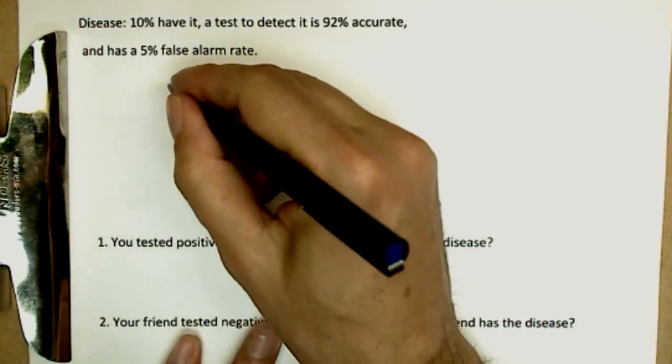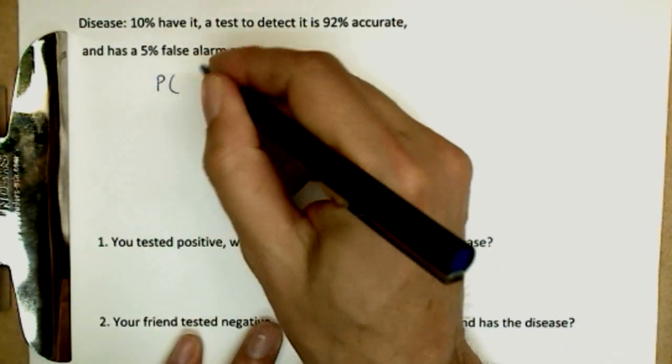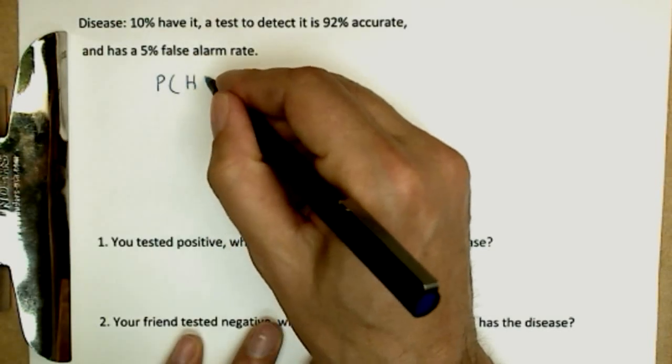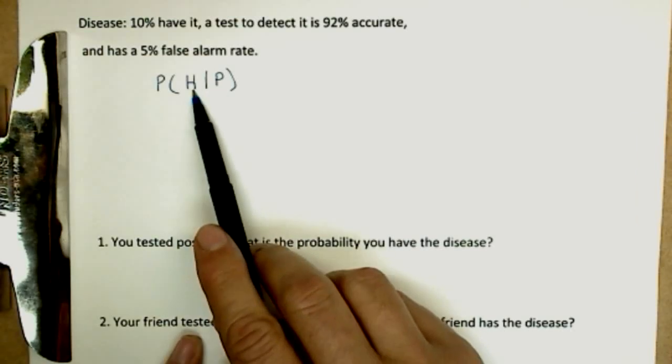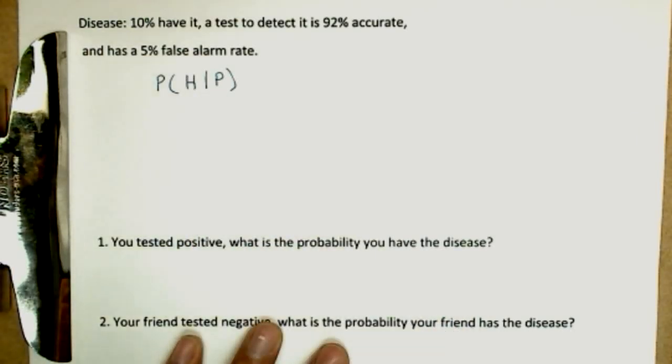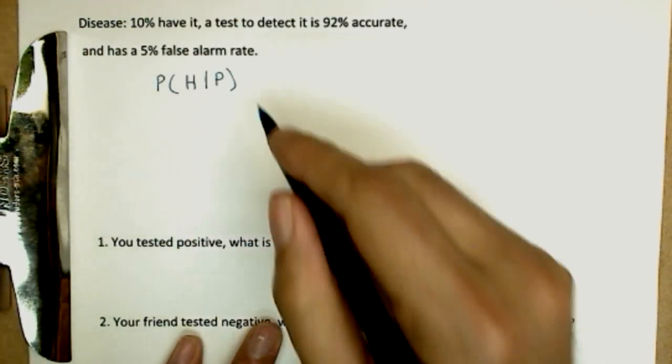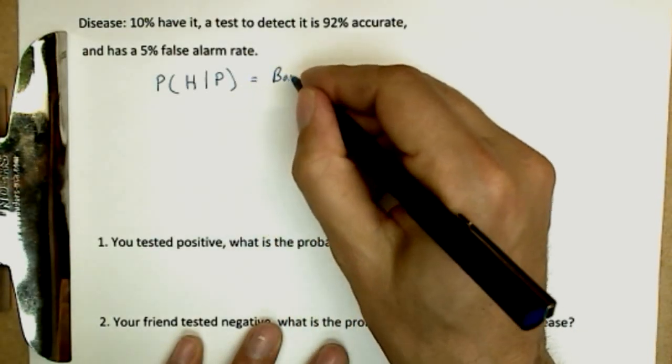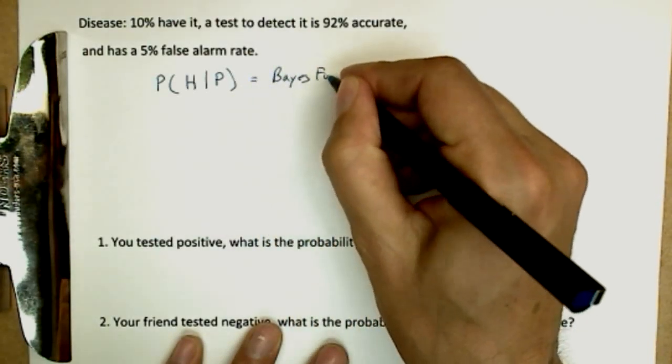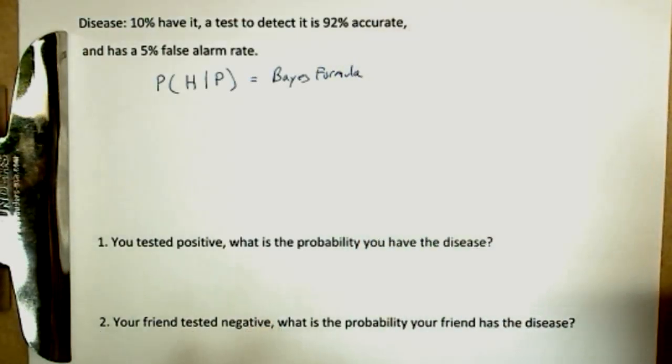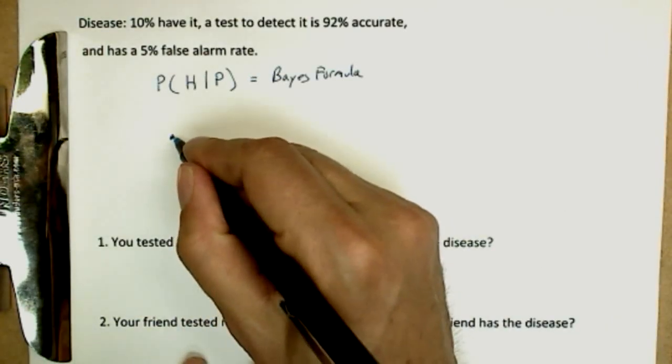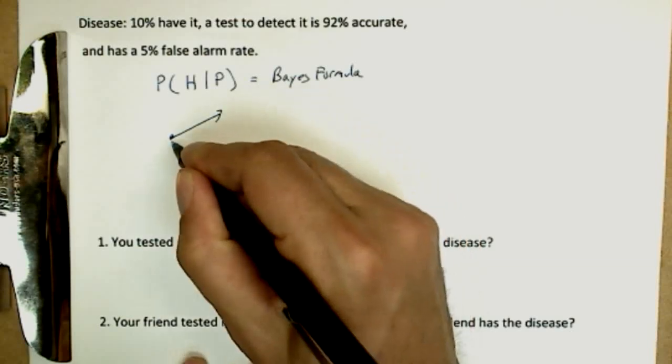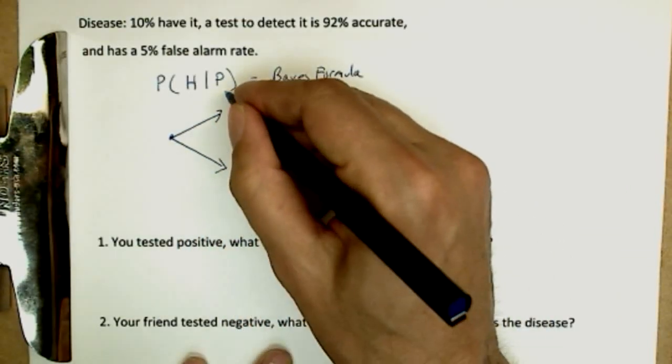So what we're trying to find is the probability that we'll call H for have the disease given you test positive. So we know you tested positive, what is the probability you have the disease? And actually this is easy to calculate. There's a formula called Bayes formula for this, and you can look it up, but we're not going to really need it. The terminology to write Bayes formula makes it look far worse than it really is. So here's what we're going to do. We're going to start off here and make a tree. And the tree starts with reality first.